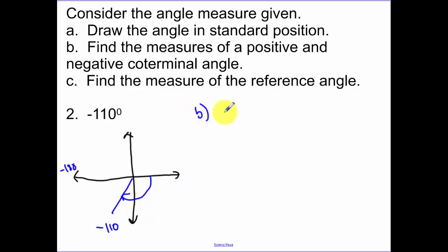Part B. Find the measure of a positive and negative coterminal angle. So negative 110 plus 360 gets me 250. Negative 110 minus 360 gets me negative 470.